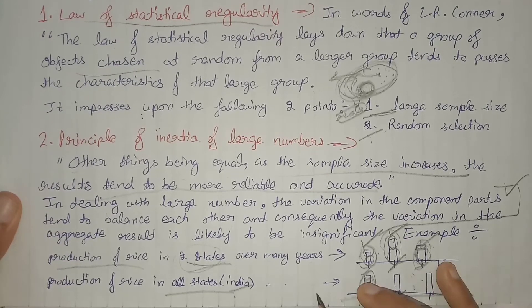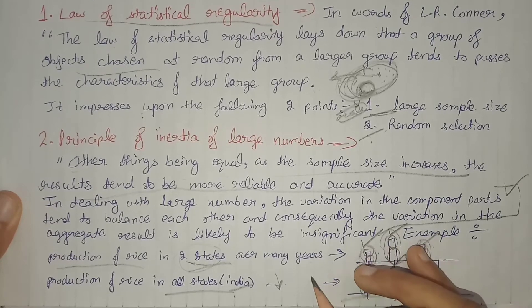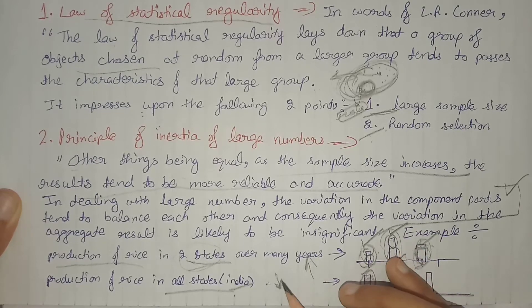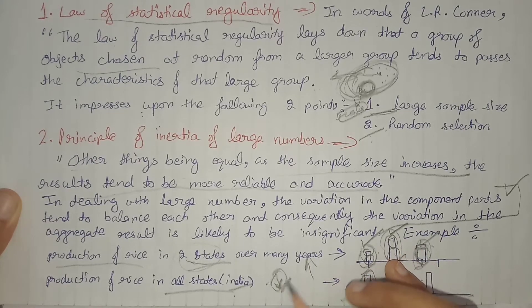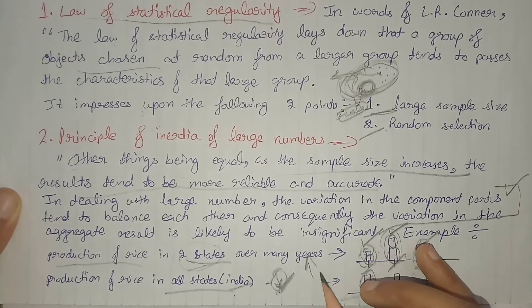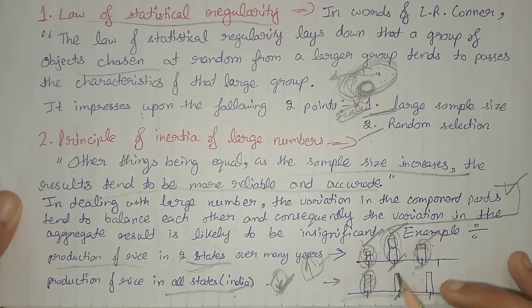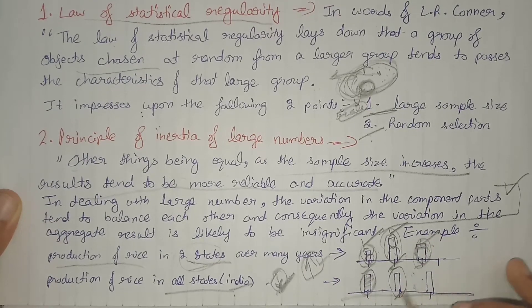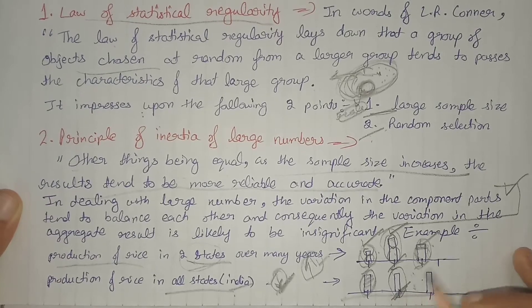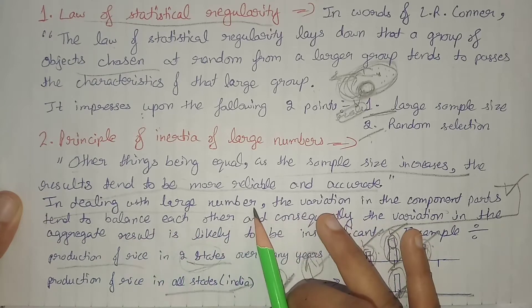In the second year, assume some states had less production while some states had more production. That means the production which decreased in some states will be covered up by the states where production increased.